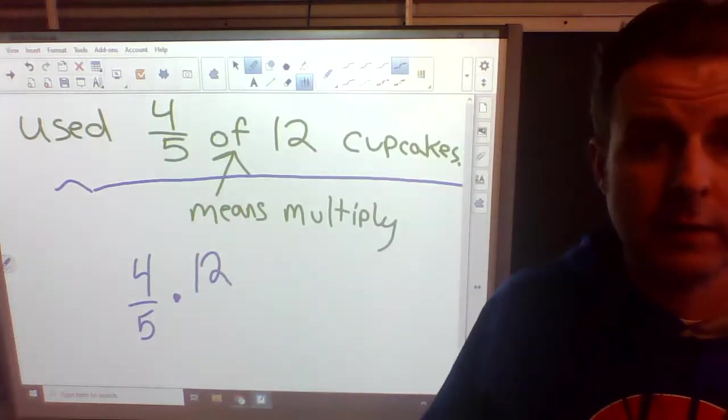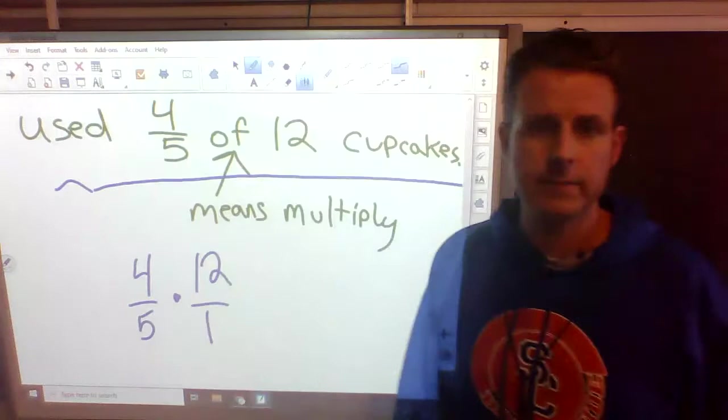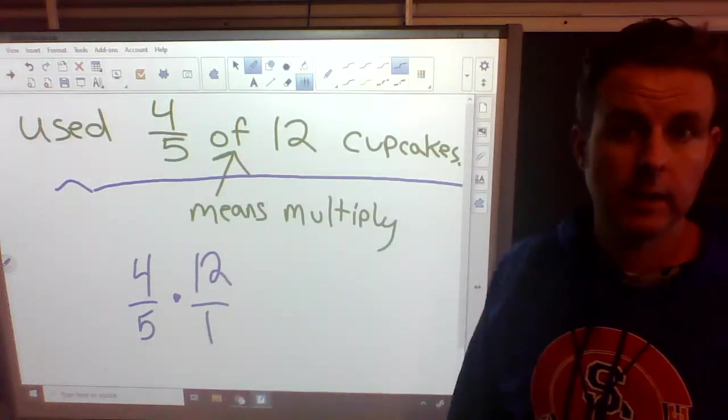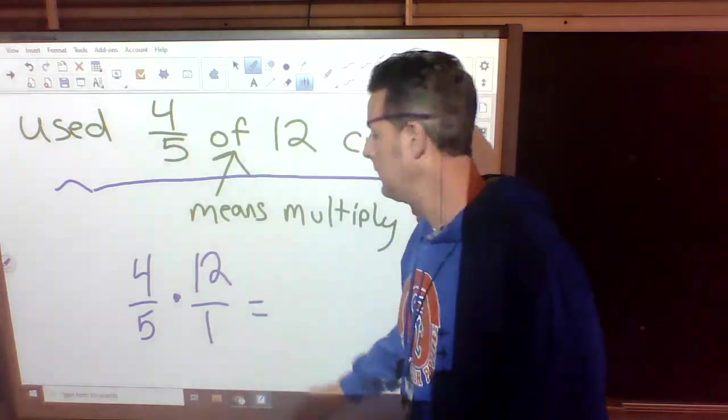So we need to take 4 fifths times 12. Now, what's wrong with 12? Well, it's not a fraction. Well, put it over 1, and now it's a fraction. Now, what do we do? We do the top times the top, the bottom times the bottom.